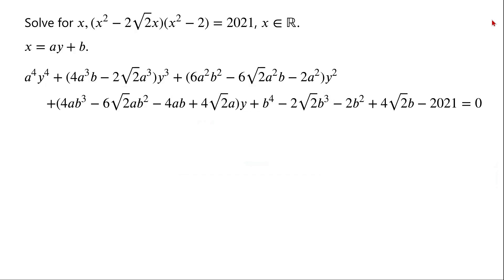By the substitution, we have converted the original equation in x to an equation in y. We want to choose the values of a and b such that the resulting equation in y is simpler and can be solved easily. If we set the coefficients of y³ and y to be zero, the equation becomes a quadratic in y², which is much easier to solve. Setting those coefficients to zero gives us a system of equations in a and b.